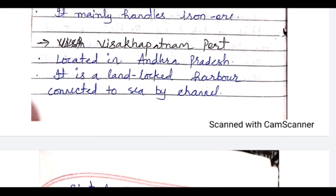The fourth East Coast port is Visakhapatnam port in Andhra Pradesh — this is a very important topic from this chapter. It is a landlocked harbour connected to the sea by a channel. Similar to Kolkata port which requires travelling 128 km by river, Visakhapatnam port is not directly on the coast — it is surrounded by land on all sides and is connected to the sea through a channel, like a canal, through which ships travel from the sea to the port.